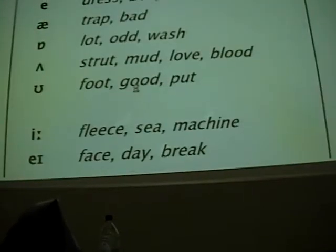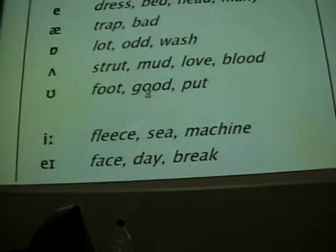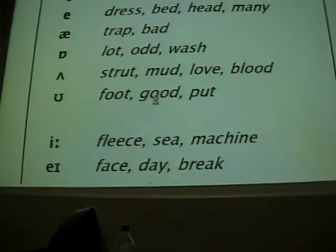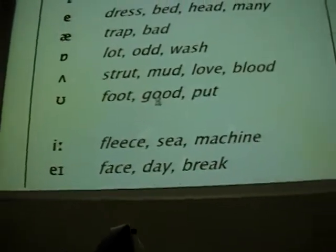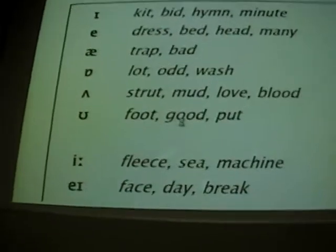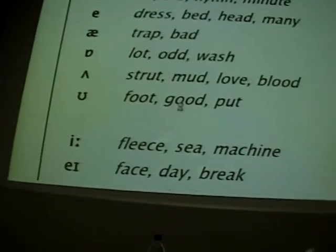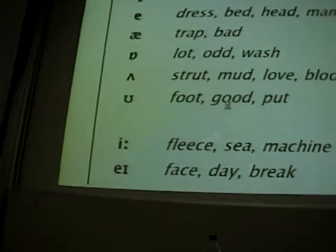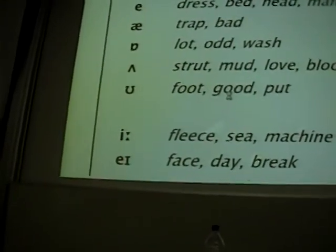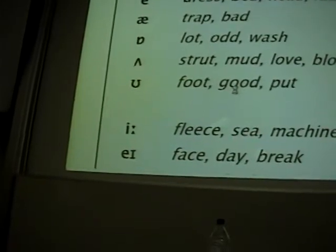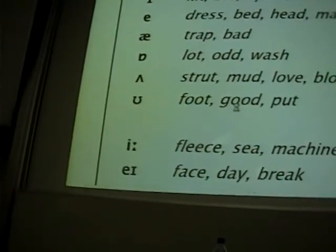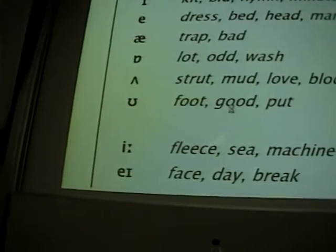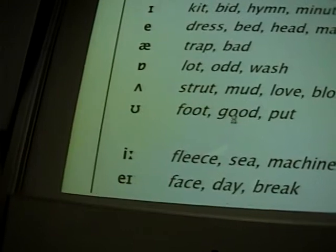In order to transcribe English, we have to learn the meanings of a certain number of symbols. In your pack you have twice over, I think, a list of the symbols you'll be using. One is the back page of a little green booklet called Segment Rules. And, if I'm not mistaken, you also have a list of symbols — there's a separate sheet in there.